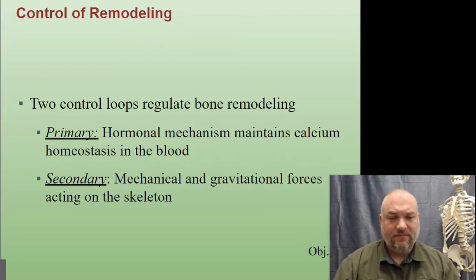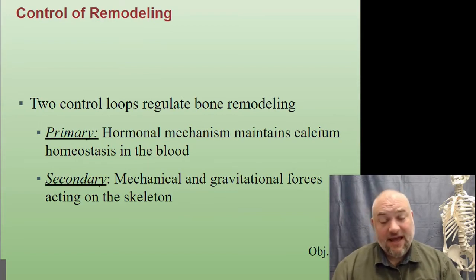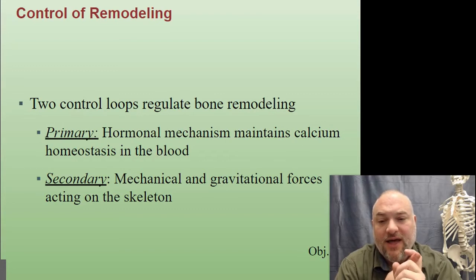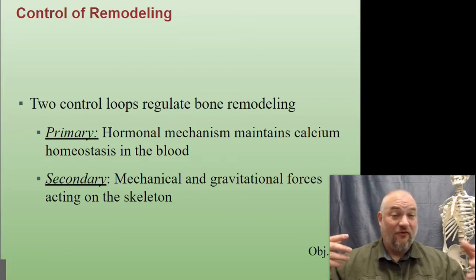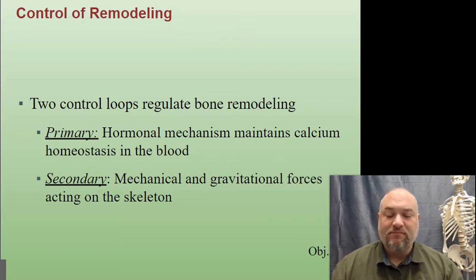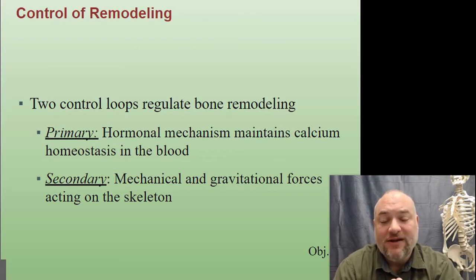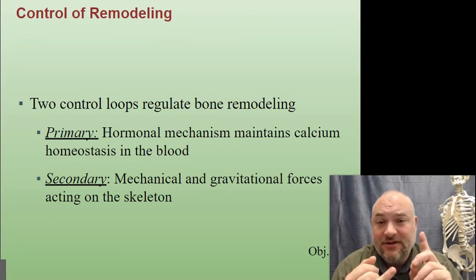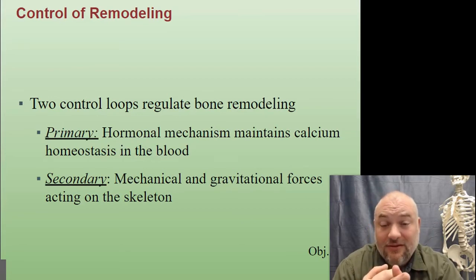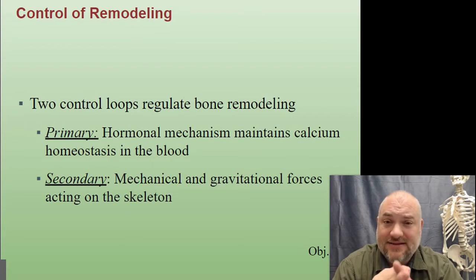How do we control this remodeling — laying down bone sometimes and taking it out at other times? There are two primary negative feedback loops. The primary one, with superior control over whether bone is deposited or removed, is the hormonal mechanism that maintains calcium homeostasis in the blood. Proper calcium levels are critical — without them, there's no muscle contraction and no nerve firing, which means no life.